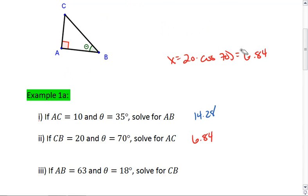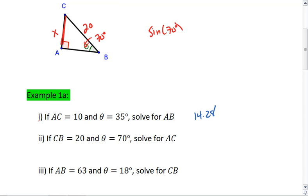Let's go through that last example now. If AB is 63, and theta is 18 degrees, we're going to solve for CB. Oh, I made a mistake. In that previous one, we were supposed to solve for AC, in which case, we want to use sine. We get sine of 70 equals x over 20. x equals 20 times sine of 70, which equals 18.79.